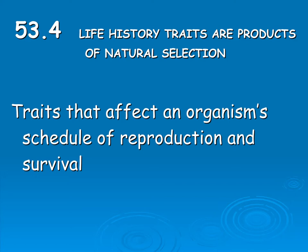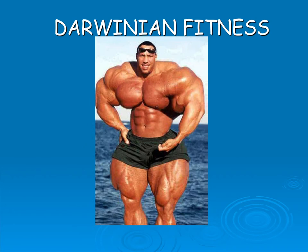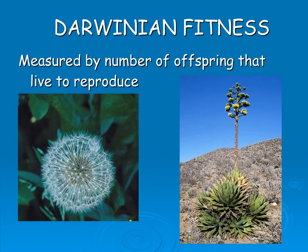Hello, today we're going to talk about life history traits, which are products of natural selection — traits that affect an organism's schedule of reproduction and survival. When we talk about Darwinian fitness in this class, we're not talking about physical fitness. We're talking about Darwinian fitness, which is measured by the number of offspring that an organism has that actually live to reproduce themselves. That's the definition of fitness we use this year.